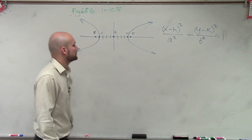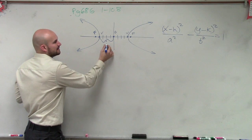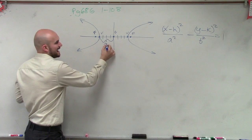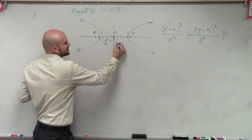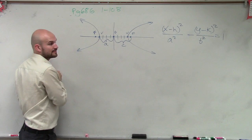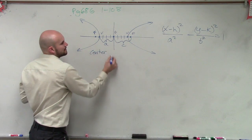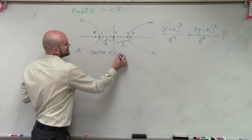So remember, the distance from the center to v is going to be a. The distance from your center to your foci is c, right? And we can see the center's at 0, 0. So we know the center is equal to 0, 0.